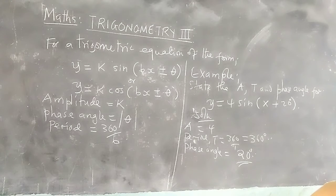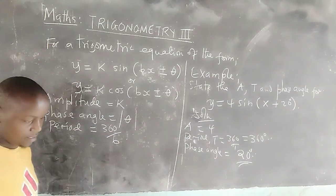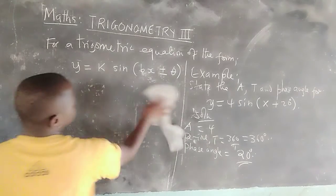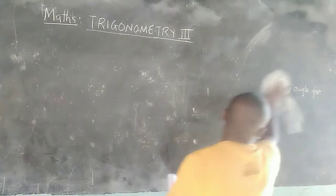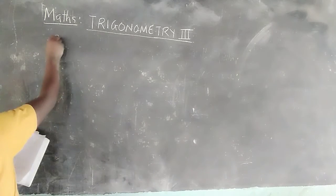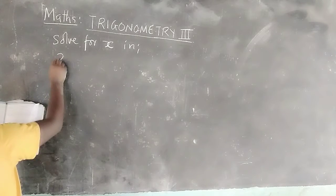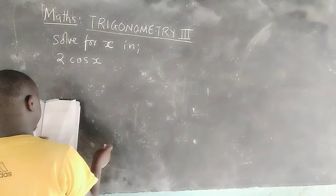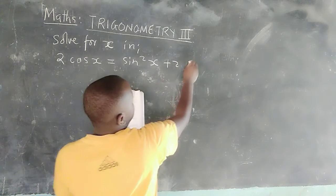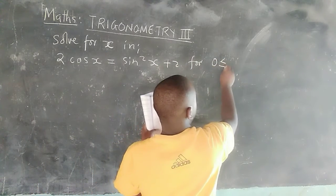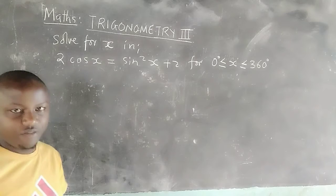Solve for x in: 2·cos(x) = sin²(x) + 2, where x lies between 0 and 360 degrees.